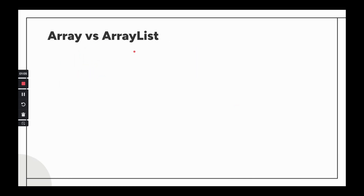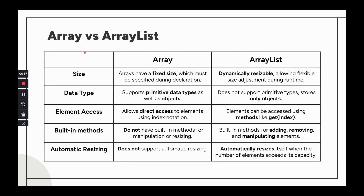Differences between array and ArrayList: Arrays have a fixed size while ArrayList uses dynamic resizing. Arrays support primitive data types; ArrayList requires objects (wrapper classes). For element access, arrays use direct index notation like a[0], while ArrayList uses the get() method. ArrayList also has built-in methods for add, remove, set, and automatic resizing, which plain arrays do not have.